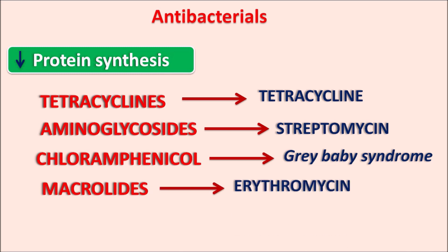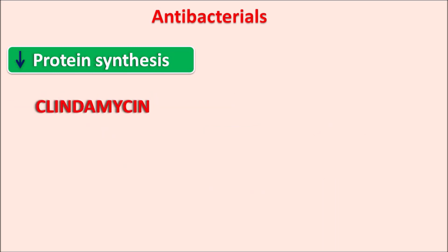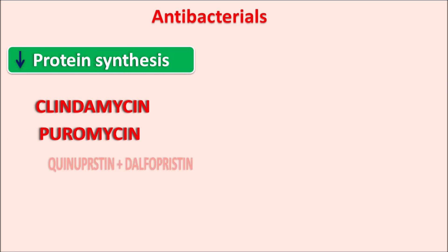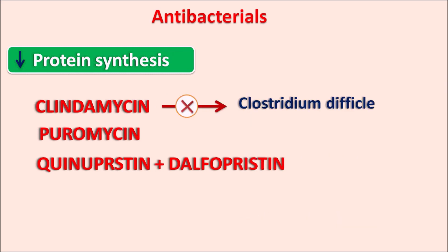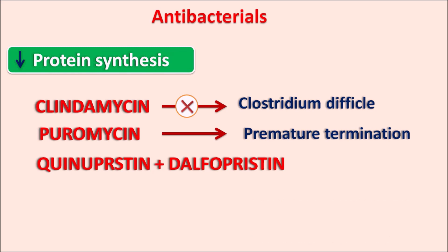Macrolides are identified by the suffix -thromycin: erythromycin, telithromycin, clarithromycin — these inhibit translocation within the bacteria. Other drugs include clindamycin, puromycin, and quinupristin plus dalfopristin. Clindamycin is not effective against Clostridium difficile infections; this organism can produce pseudomembranous colitis resulting in diarrhea. Puromycin produces premature termination of protein synthesis, leading to formation of inactive proteins.